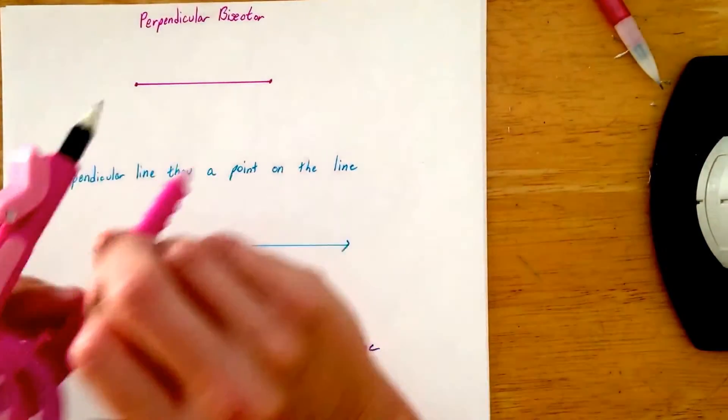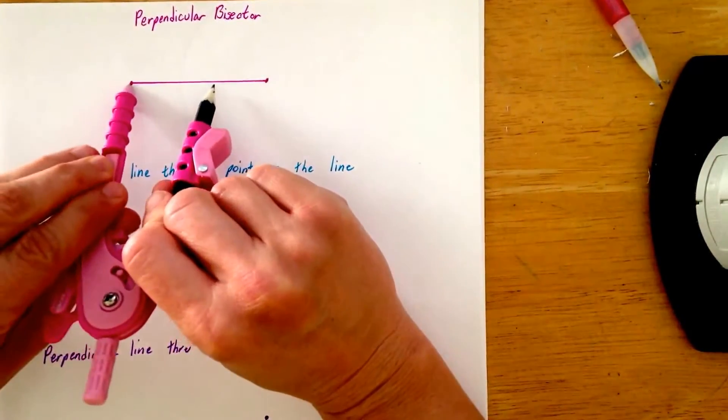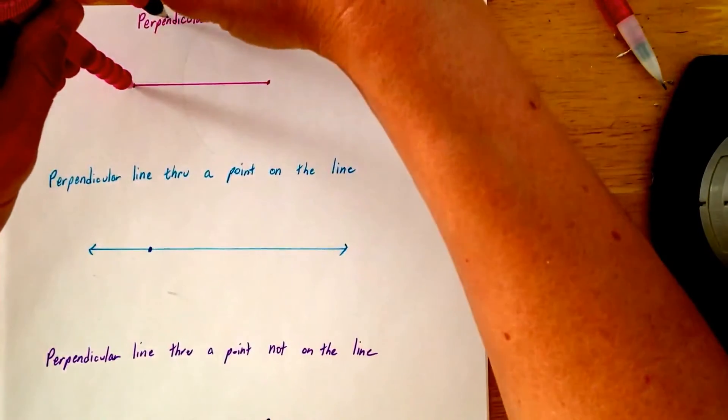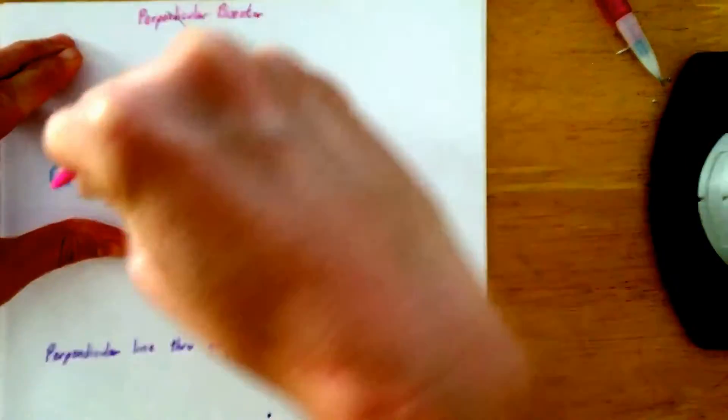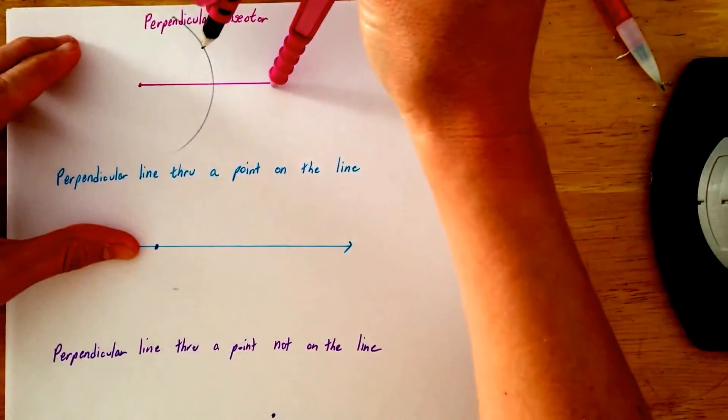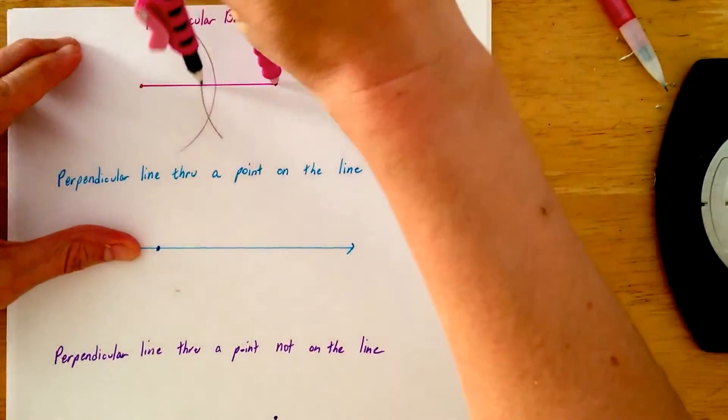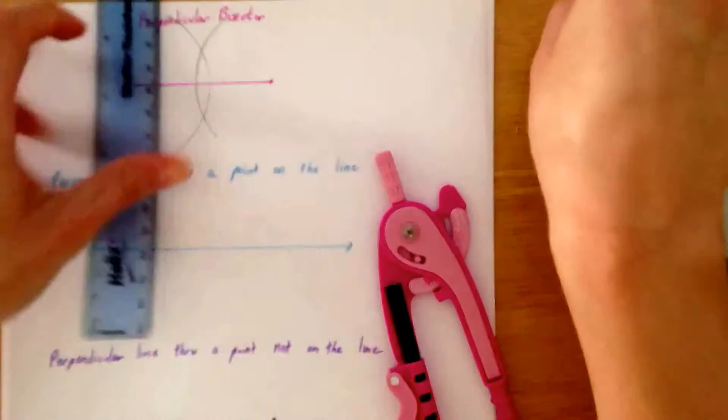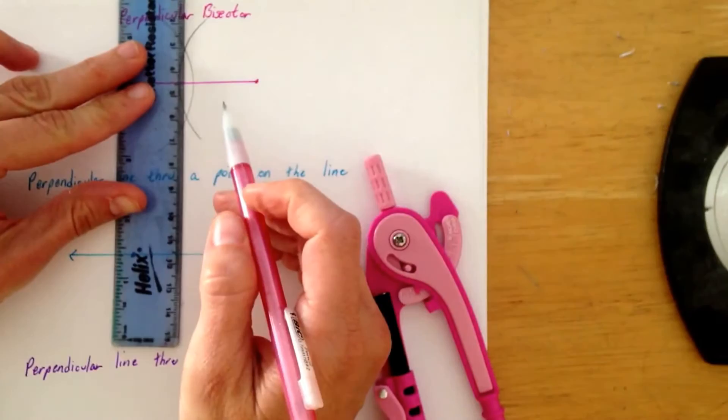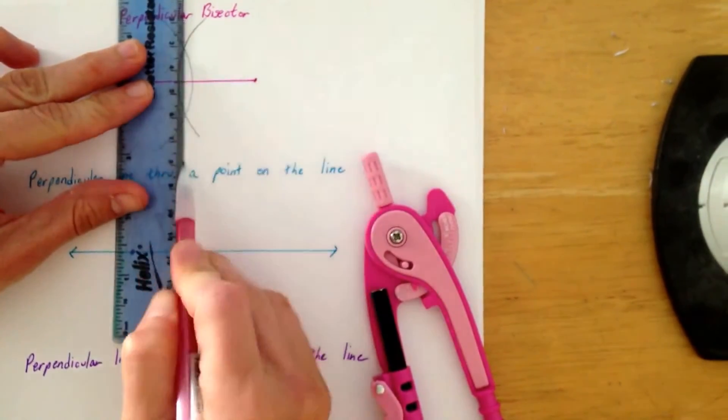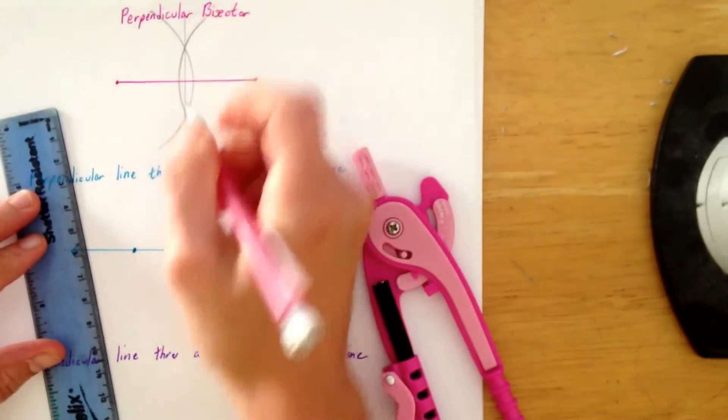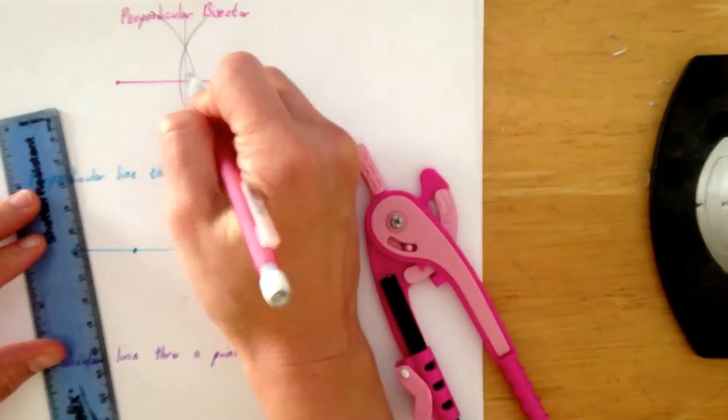Alright, so for our perpendicular bisector, we're going to open up our compass to more than halfway, draw an arc, draw an arc from the other end point, and then just connect the dots through there. You're done. You've created a line that's bisected this line, and it's perpendicular.